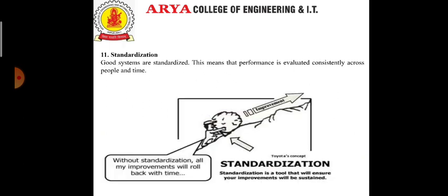The next is standardization. Good systems are standardized, meaning performance is evaluated consistently across people and time. To achieve this goal, ongoing training of those in charge of appraisals — usually managers — must be included in the process compulsorily.